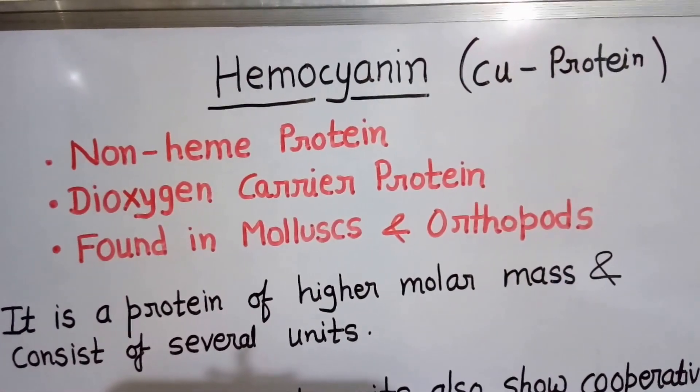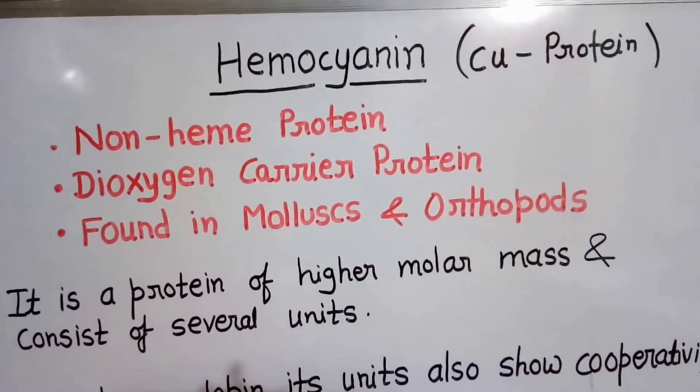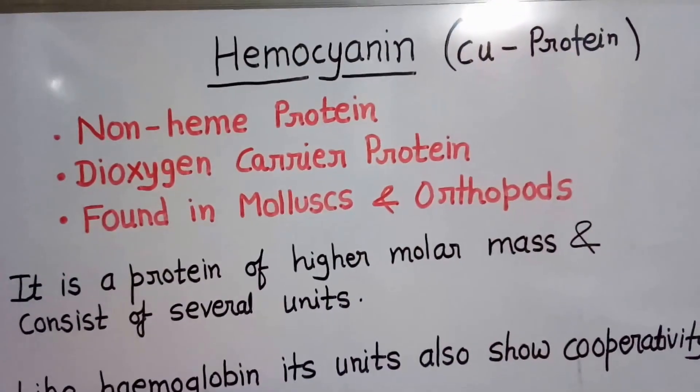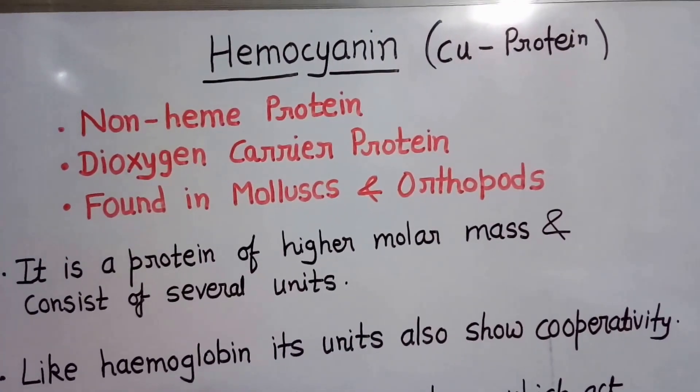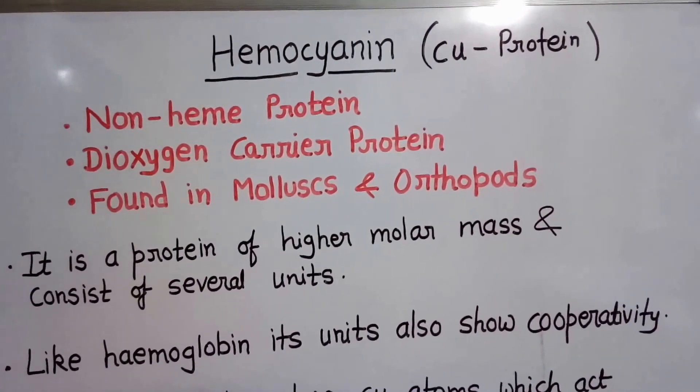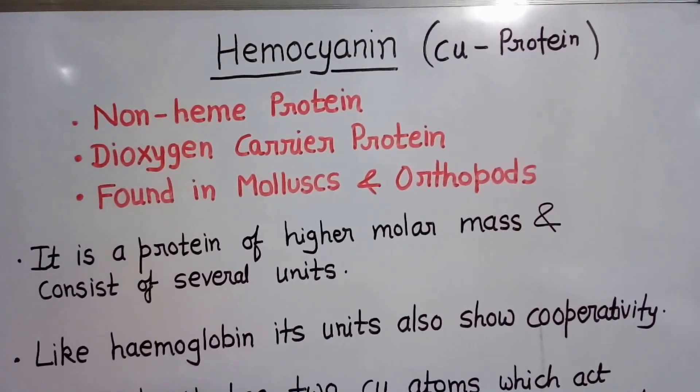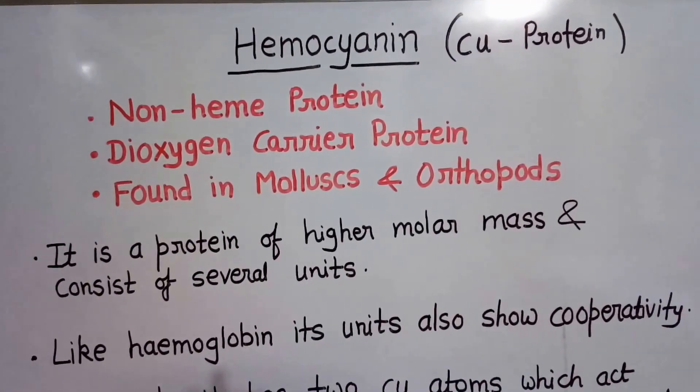Oxygen is necessary for respiration and is transported by various types of pigments found in various organisms. For example, in the human body, hemoglobin acts as the oxygen carrier while myoglobin acts as oxygen reservoir. In some marine invertebrates, hemerythrin acts as the oxygen carrier.